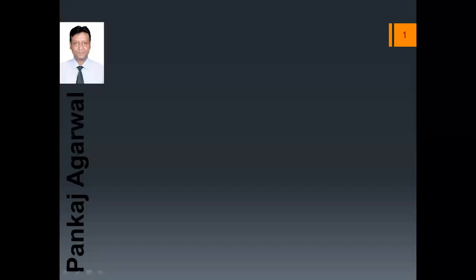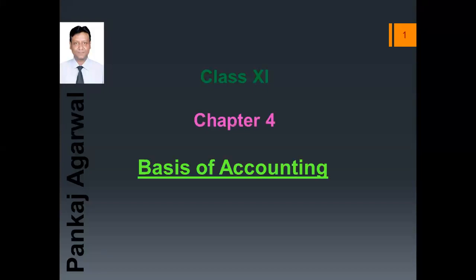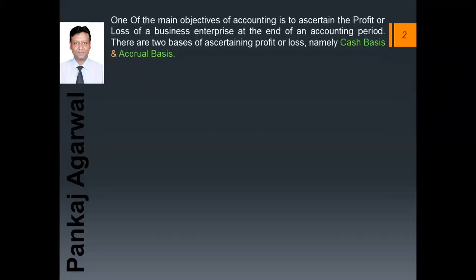Good morning students. Today we are going to study chapter 4 of 11th class, that is the basis of accounting. One of the main objectives of accounting is to ascertain the profit or loss of a business enterprise at the end of an accounting period. There are two bases of ascertaining profit or loss, namely cash basis and accrual basis. Let us first understand what we mean by cash basis of accounting.